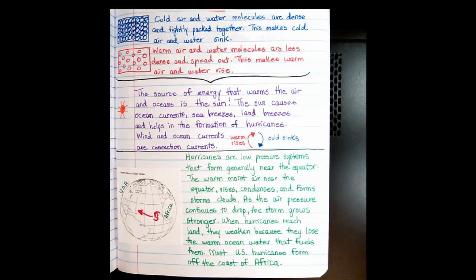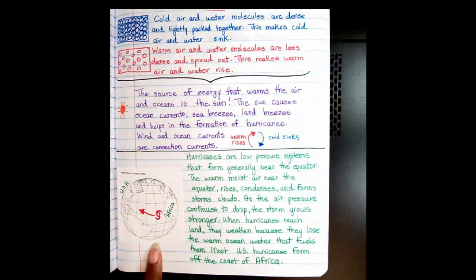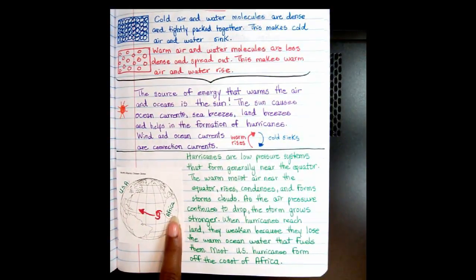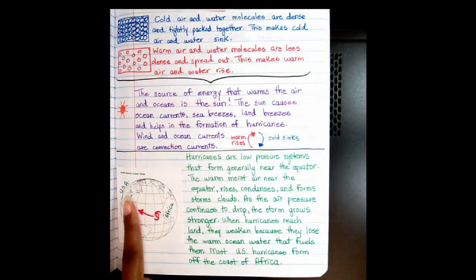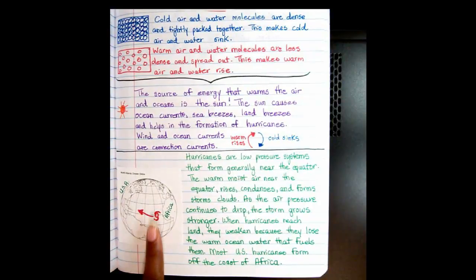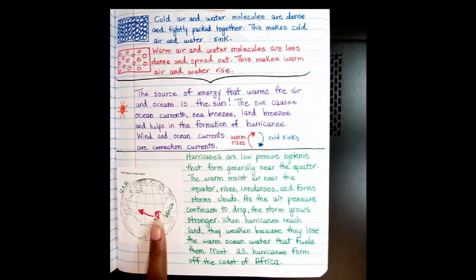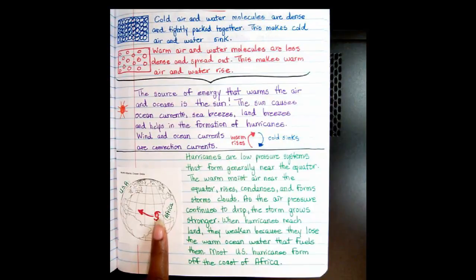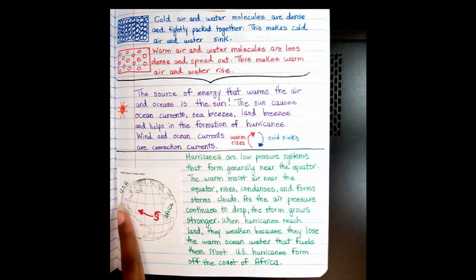Most U.S. hurricanes form off the coast of Africa. On the map that you glued in, label Africa and the USA. Make a little hurricane symbol and show that most hurricanes generally flow from Africa to the USA.